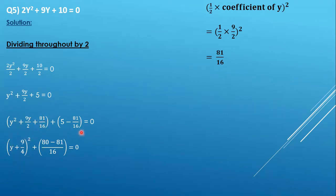And we will cross multiply this part. So 5 × 16 gives us 80. So (80 - 81) / 16 and we get (y + 9/4)².